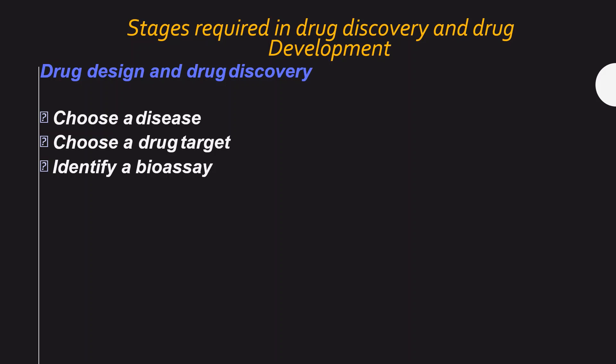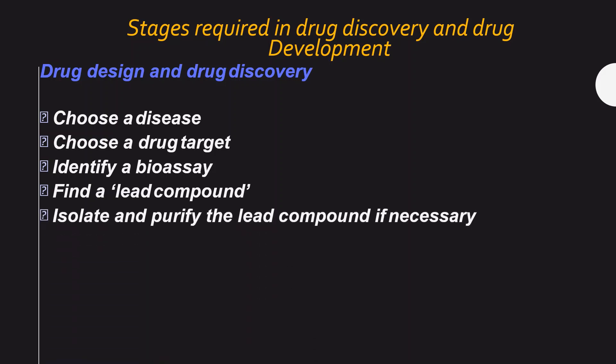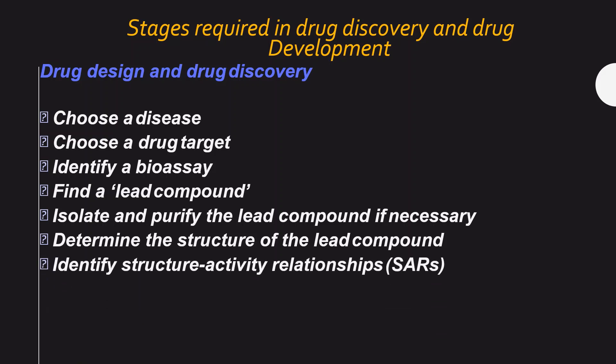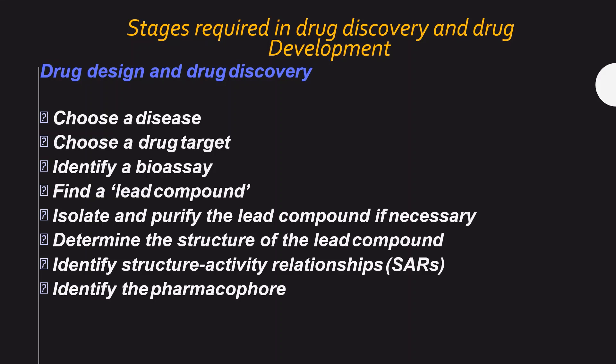Then we find the lead compound, isolate and purify it if necessary, and determine the structure of the lead compound. We identify where the drug comes from — natural plant sources, synthetic sources, or animal sources. Then we identify the structure-activity relationship and the pharmacophore. The pharmacophore is a concept to find the moiety that substitutes and binds to receptors to give biological activity and improve target interaction.